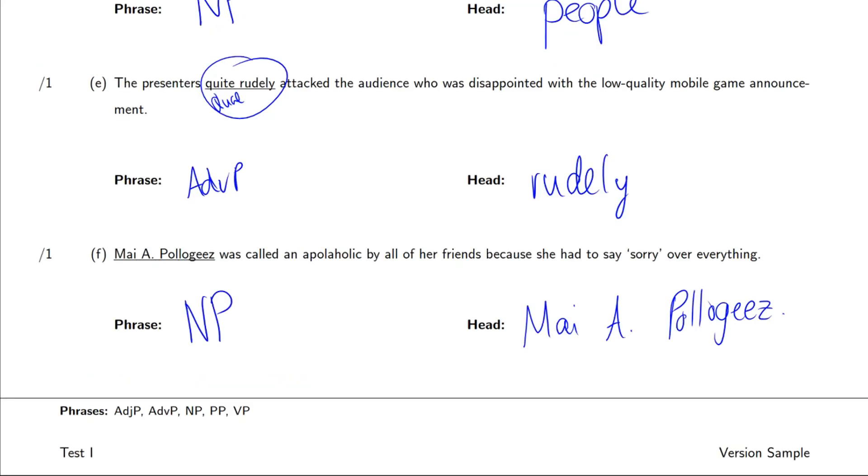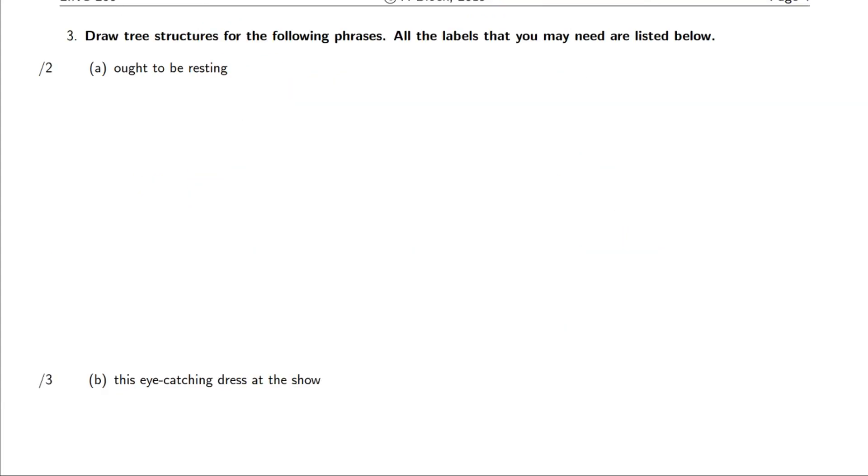So question three, here's where we're drawing trees. All of the labels are listed at the bottom as well. And this is where we would see our NP gen, if we were to have one.